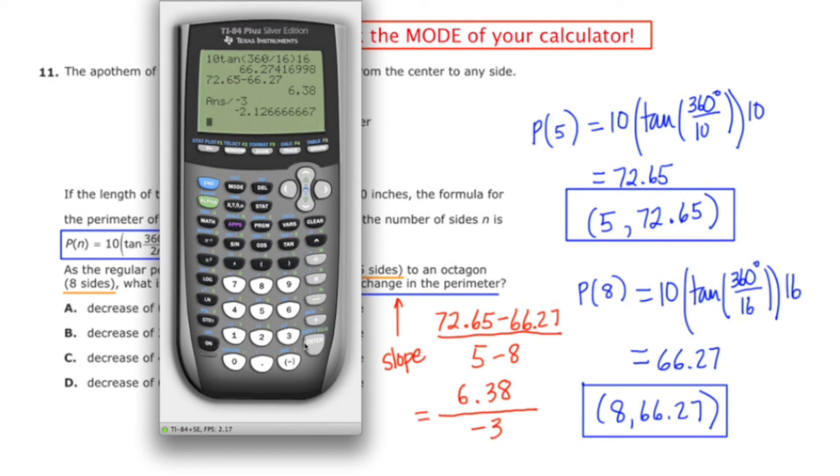And I get negative 2.13, if I'm rounding to the nearest hundredth.